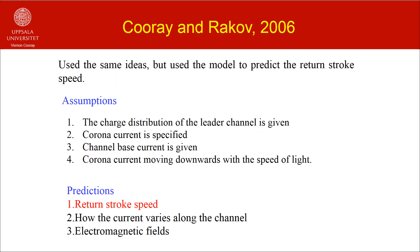In 2006, Currey and Rakow used the same ideas but used the model to predict the return stroke speed. The input parameters of the model are the charge distribution of the leader channel, the corona current decay time constant, and the channel base current. As in the previous models, the corona current moves downwards with the speed of light. The model managed to predict the return stroke speed, how the current varies along the return stroke channel, and the electromagnetic fields.